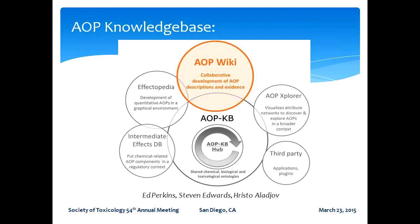The AOP wiki is part of a larger collection of tools known as the AOP Knowledge Base. Some other elements besides the AOP wiki are the Intermediate Effects Database — a place to store everything you know about a particular intermediate event, which can then be reused to populate different pathways. And Effectopedia, which we're going to hear more about today, is a relational knowledge base that allows you to add quantitative information about the relationships between various elements in an AOP and the context of the AOP — for example, species specificity, sex, and developmental stage.